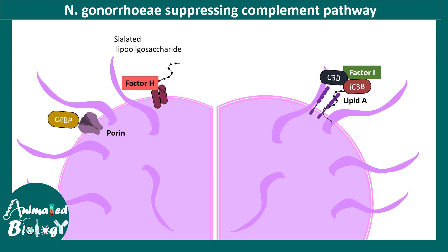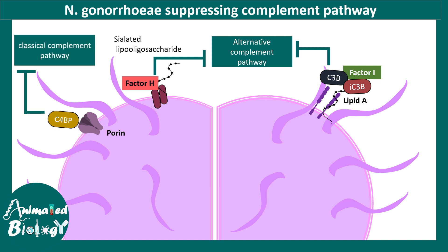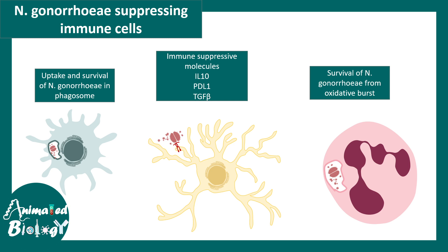N. gonorrhea has several modifications in their surface adhesion proteins which can prevent both the alternative and the classical complement pathway — this is how one innate defense system is disarmed. It can also modify the activity of phagocytic cells: macrophages can uptake N. gonorrhea, but the phagosome fails to destroy it. Similarly, neutrophils can uptake these bacteria but cannot destroy them. Normally, neutrophils and macrophages undergo oxidative burst to destroy pathogens with reactive oxygen species, but N. gonorrhea has developed a mechanism to counter reactive oxygen species and protect themselves.